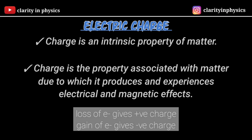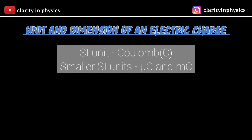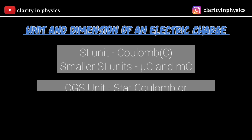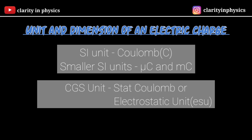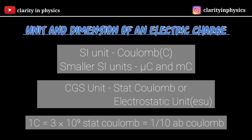Loss of electrons gives positive charge and gain of electrons gives negative charge to a particle. The SI unit of charge is the coulomb; smaller SI units are microcoulomb and millicoulomb. The CGS unit is stat coulomb or electrostatic unit, and the electromagnetic unit is ab coulomb. One coulomb equals 3×10⁹ stat coulombs, which equals 1/10 ab coulombs. The dimensional formula of charge is [AT].